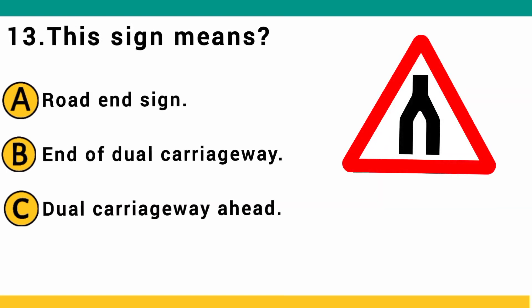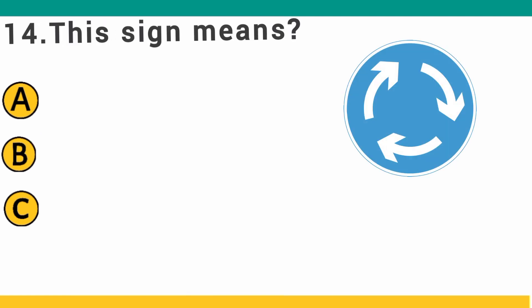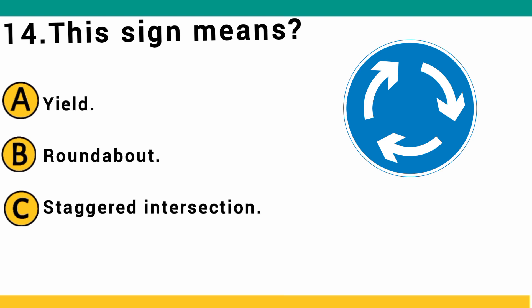This sign means: A) road end sign, B) end of dual carriageway, or C) dual carriageway ahead. The correct answer is B: end of dual carriageway. This sign shows that the dual carriageway is coming to an end and entering a single carriageway.